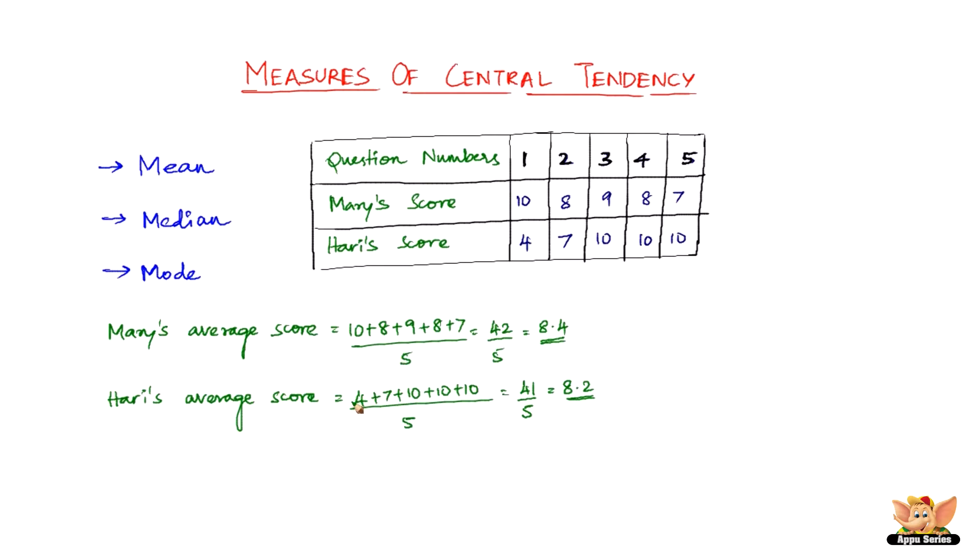He arranged both their scores in ascending order and found out the middle scores. Hari arranges the marks in the ascending order and he finds the middle scores. Mary's middle score is 8, and Hari's middle score is 10.